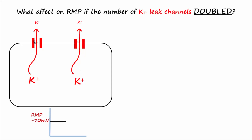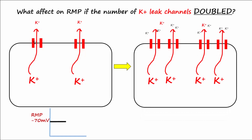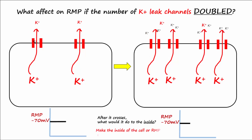This would increase the permeability of potassium and increase the potential for a positive ion to leave even more. Ask yourself: after potassium crosses the membrane and leaves, what would this do to the RMP or inside of the cell? This would increase the potential for a positive ion to leave, and it would make the inside more negative or cause hyperpolarization — and you are correct.